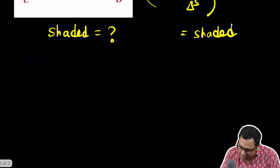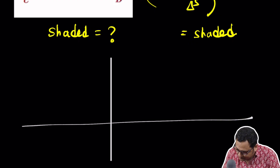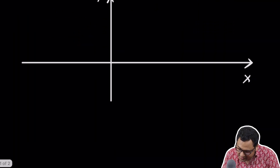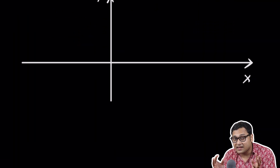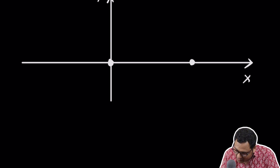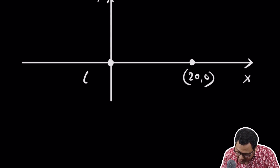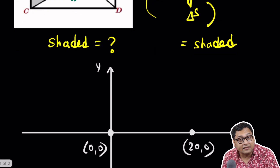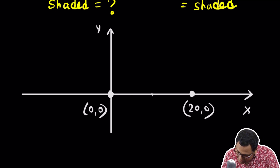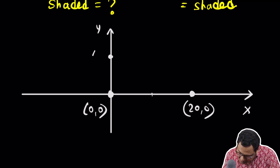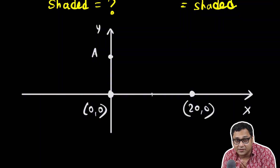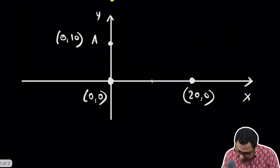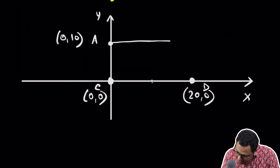Let's try to do that. I will draw the X and Y coordinate system. This is the X axis and this is the Y axis. We know the width of the rectangle is 20, so I'll take the point (20, 0) here, and this point is (0, 0). I know that the height of the rectangle is 10, so this point is (0, 10). And this point here is C, and this is D. I'll complete the rectangle.